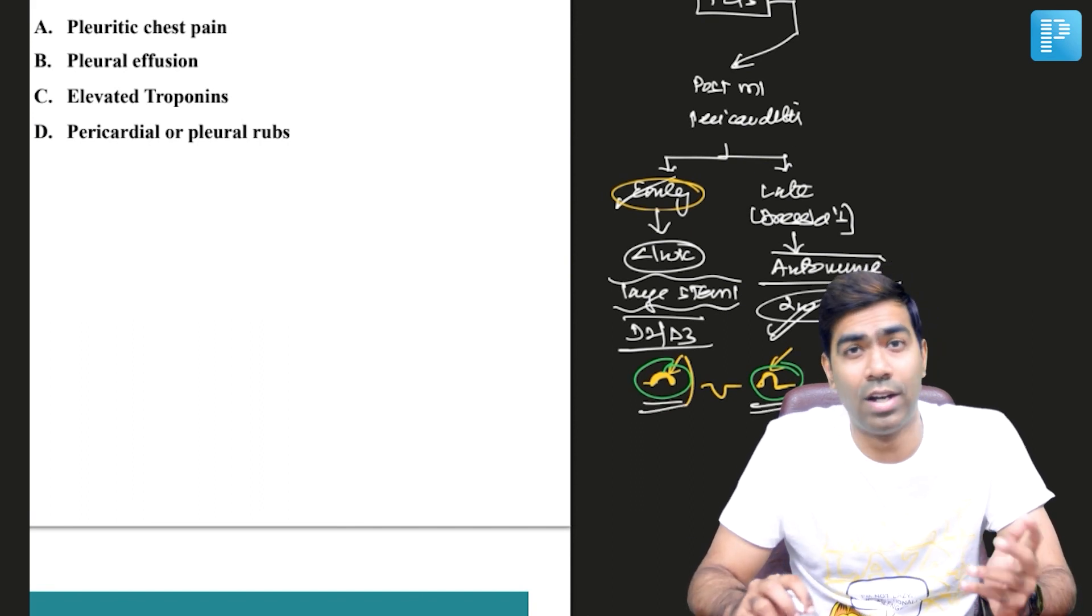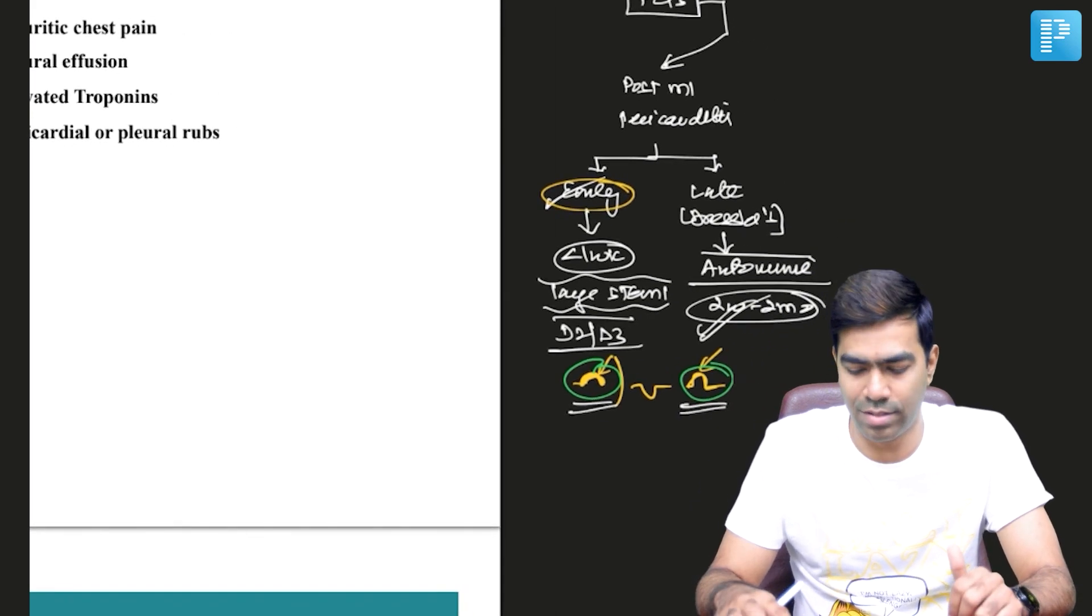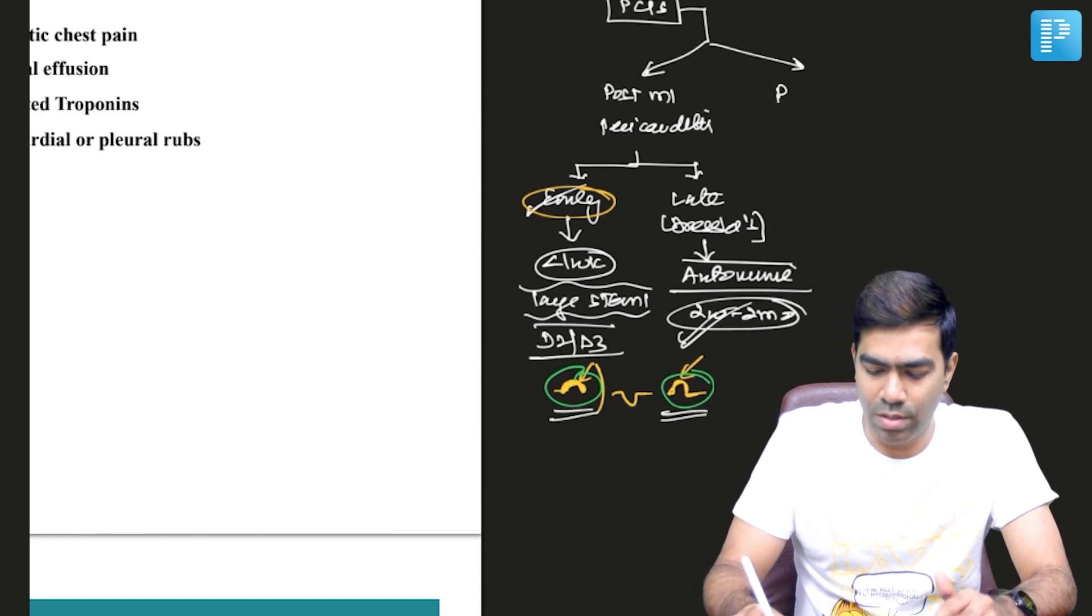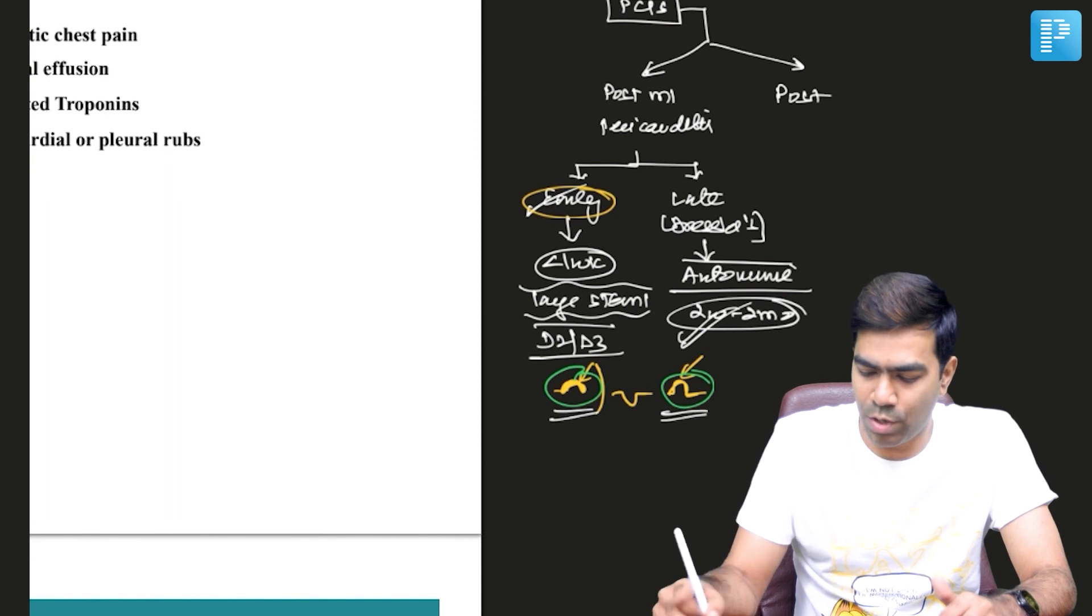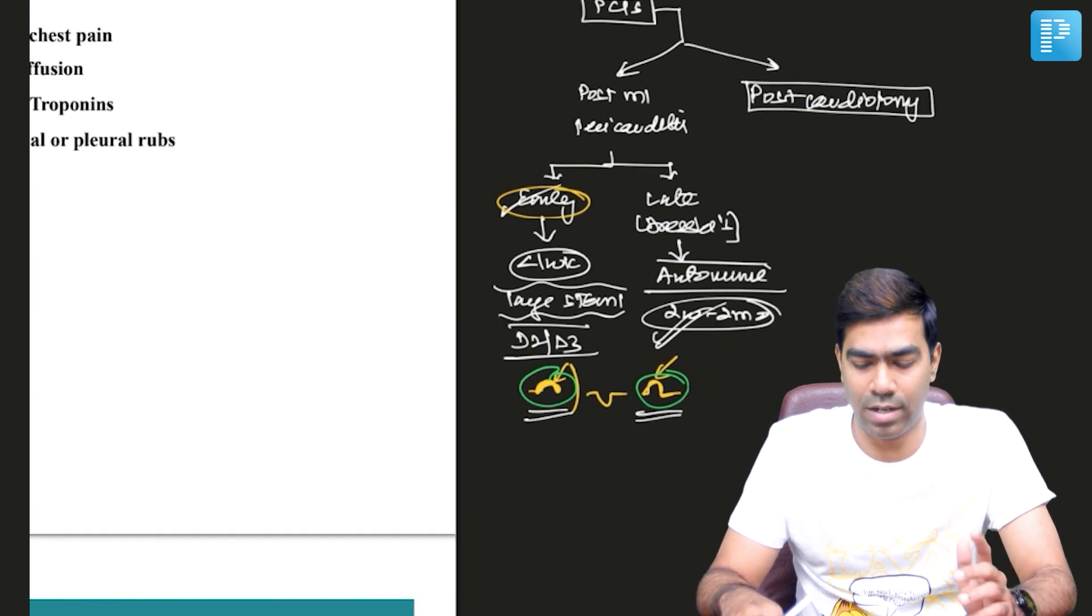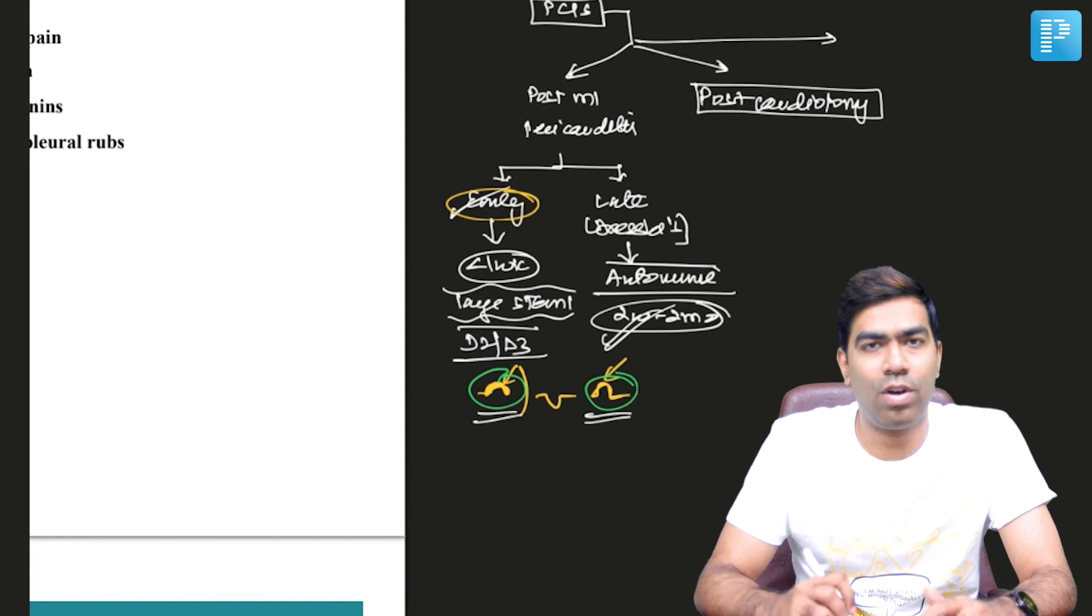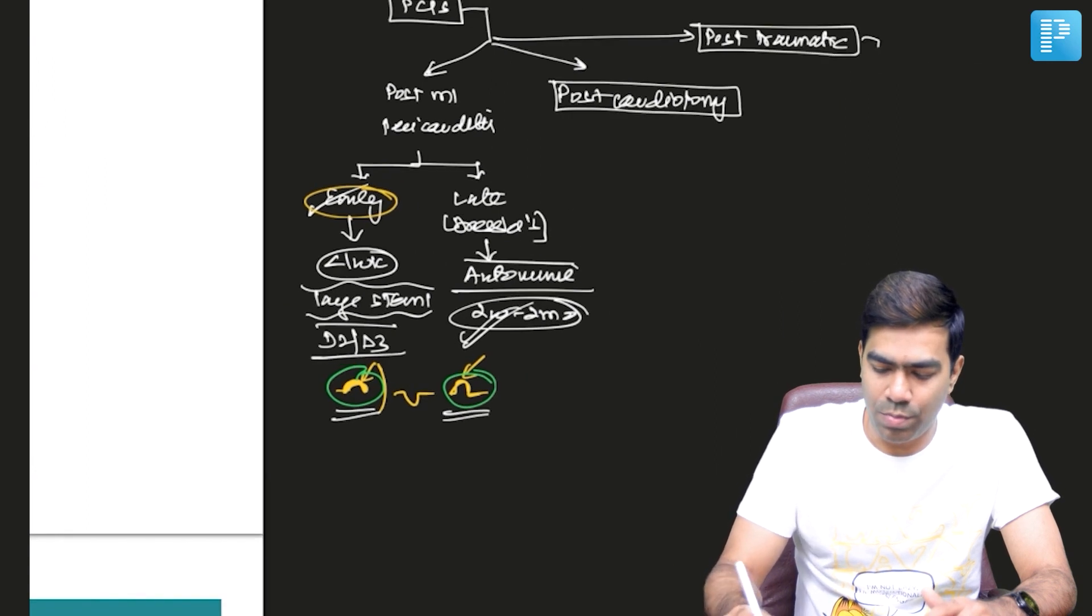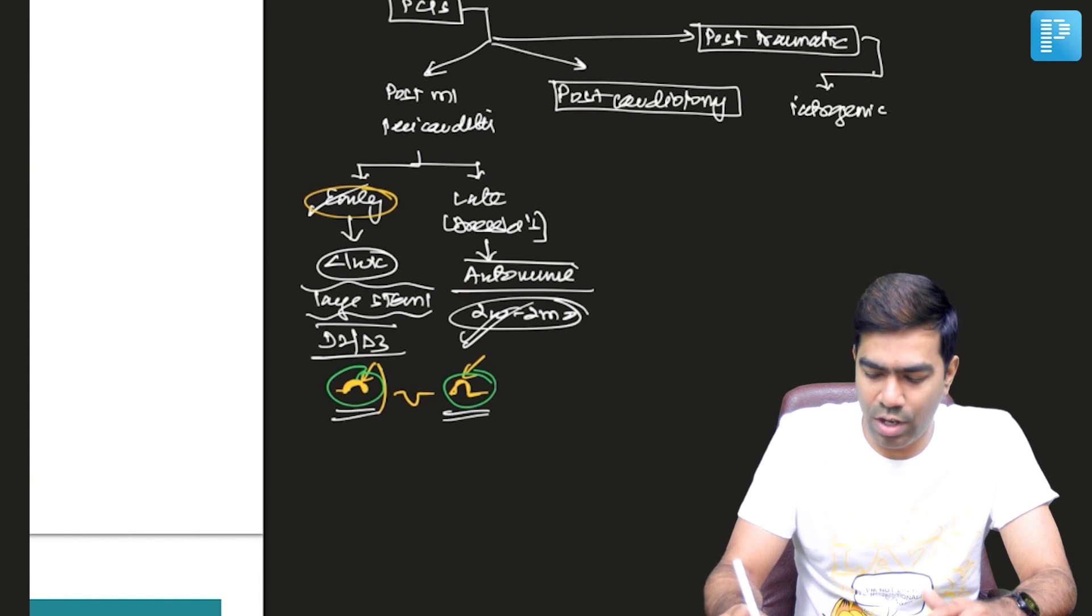In fact, this is one of the very important findings - persistently upright T-waves in the infarcted territory or a quick transition from an inverted T-wave to a positive T-wave within a couple of days or three is what is going to be very sensitive and specific for diagnosis of early post-MI pericarditis. It's a very important question for NEET-PG. The second type of post cardiac injury syndrome is going to be post-pericardiotomy or post-cardiotomy pericarditis. After a cardiac surgery, you can get pericarditis.